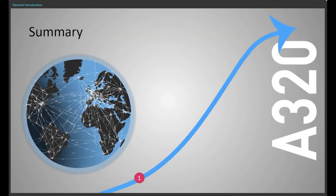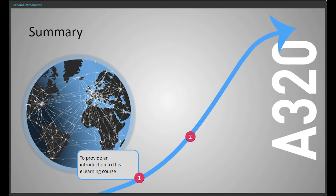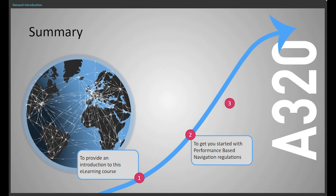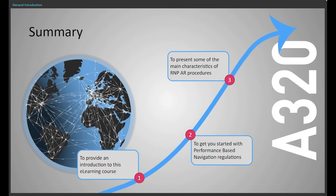We've now completed this module. We've given you an introduction to this e-learning course and told you about the modules you need to complete, as well as the quiz that comes at the end. We've outlined some of the performance-based navigation regulations and presented the main characteristics of RNP AR procedures.